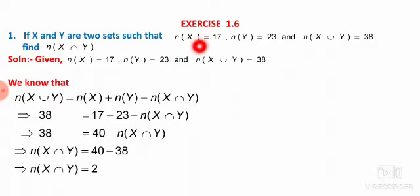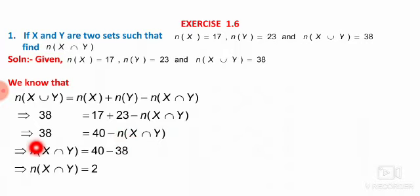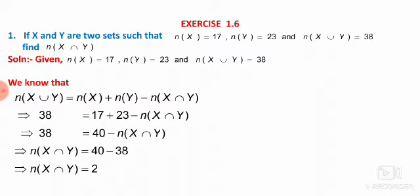Substituting: 38 equals 17 plus 23 minus N of X intersection Y. That gives 38 equals 40 minus N of X intersection Y. Bringing N of X intersection Y to the left and 38 to the right: N of X intersection Y equals 40 minus 38 equals 2. Therefore the number of elements in X intersection Y is 2. These are the questions expected in the examination for two marks.